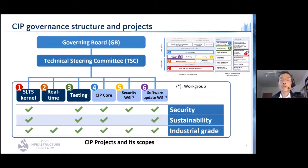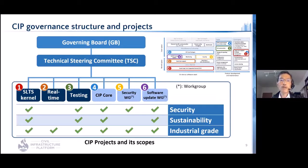CIP's governance structure has a governing board organized with Platinum members. It decides CIP directions overall — whom CIP should collaborate with, what CIP should invest, how budget should be allocated, and so on. All technical issues or directions are discussed at the Technical Steering Committee, TSC. All member companies can join TSC meetings, usually held once every two weeks via web conference.